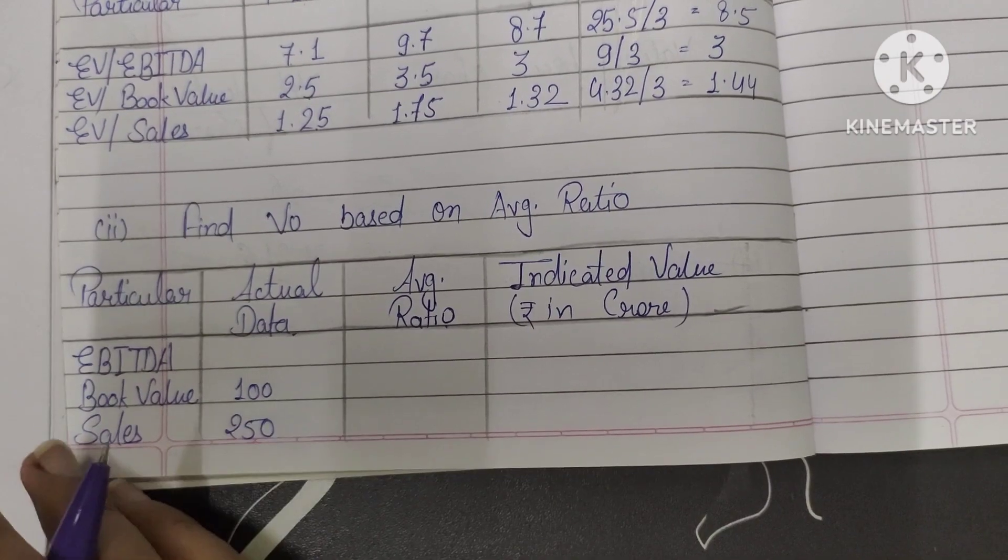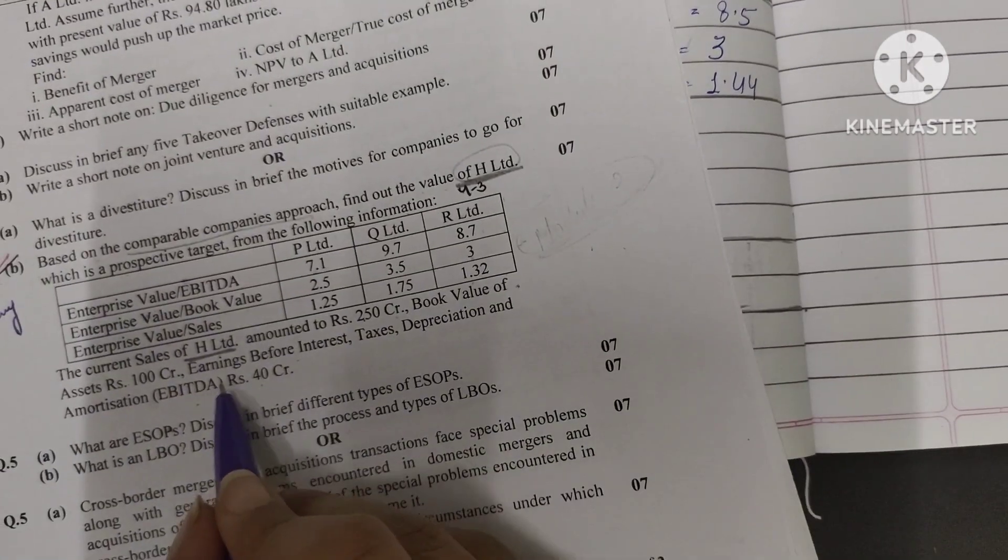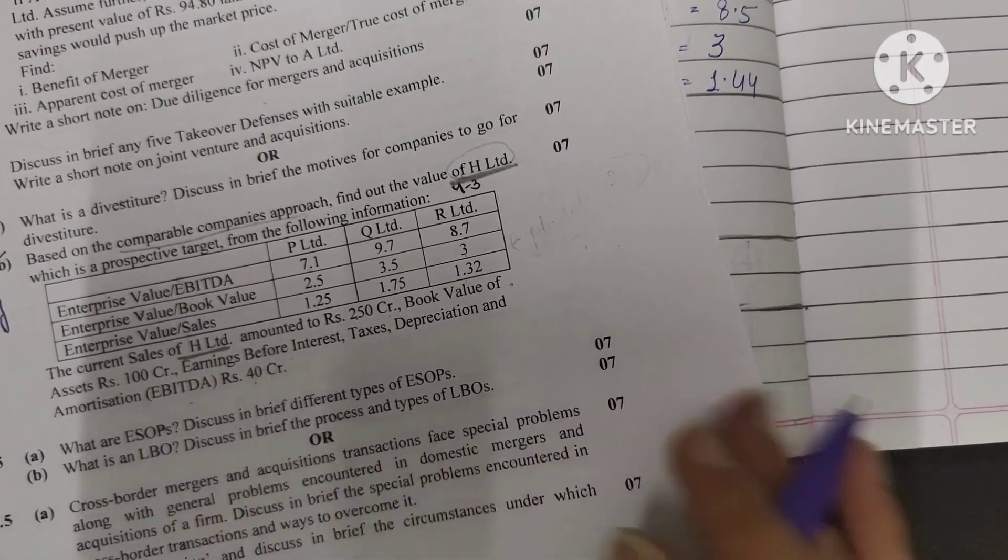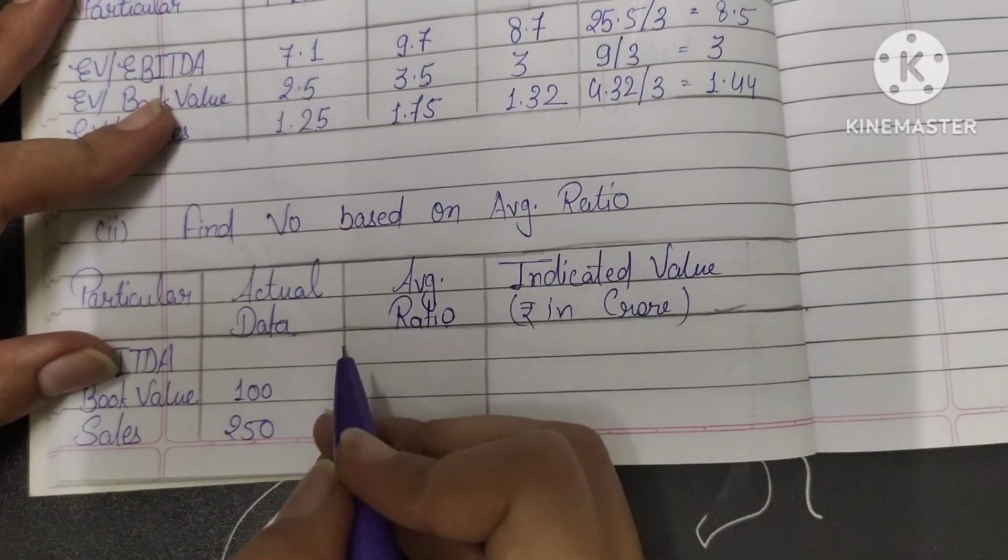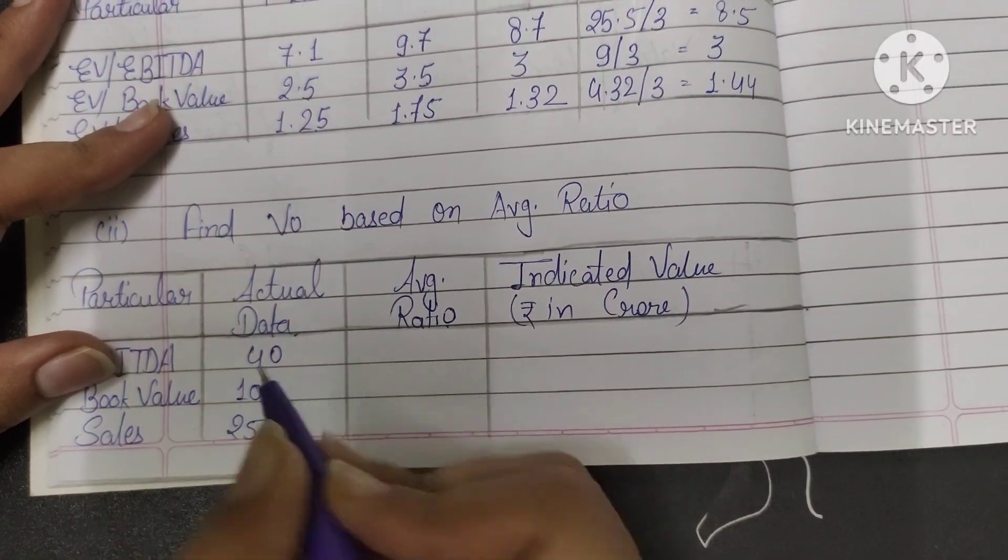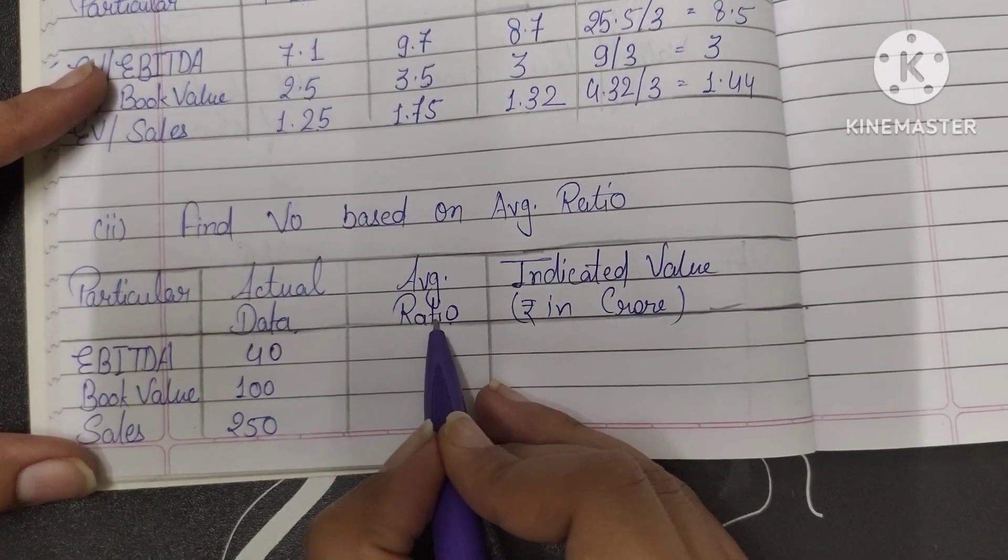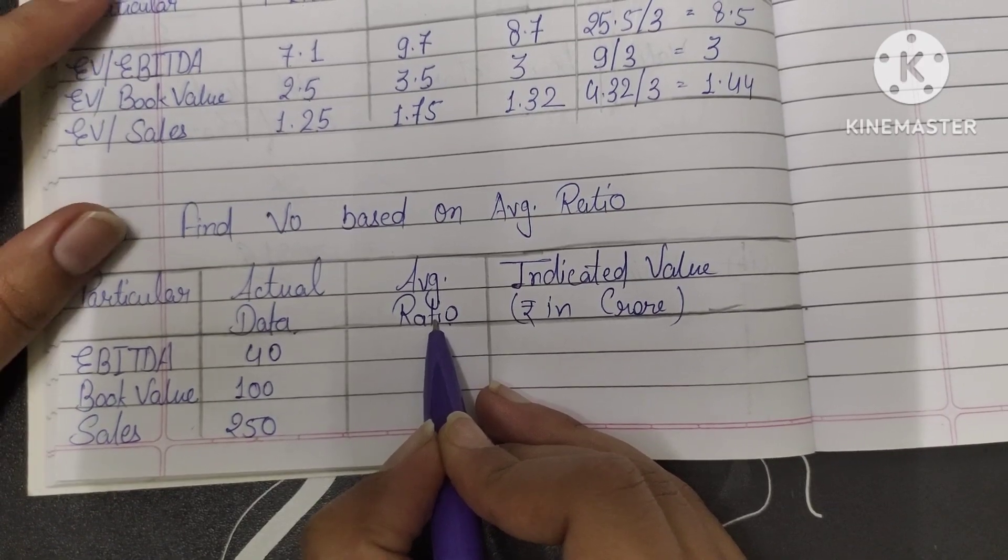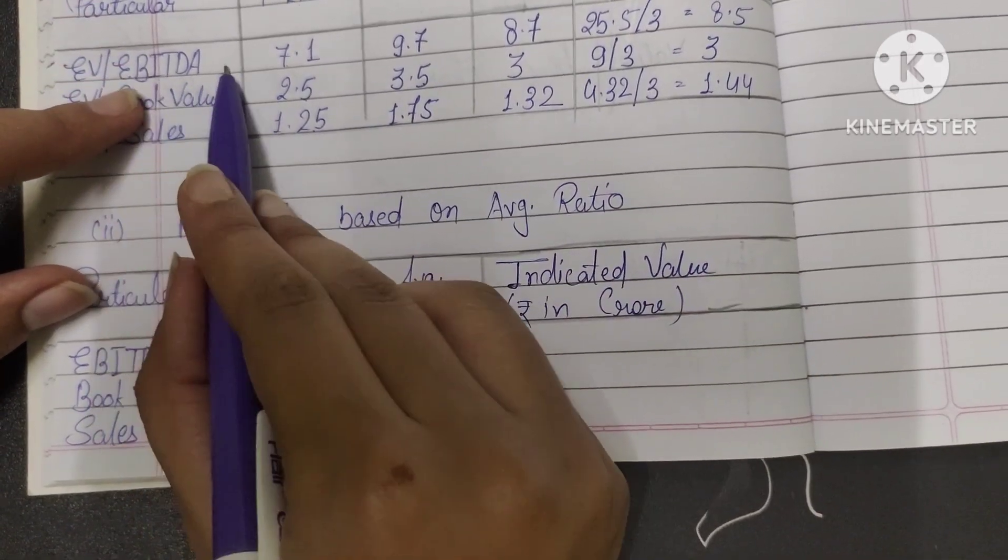Then you are given book value of assets is 100 crore, so book value of assets is 100. And then you were given in the question EBITDA, that is 40 crore. Check if everything is there. We have written it all.